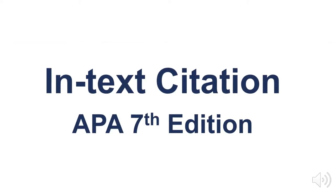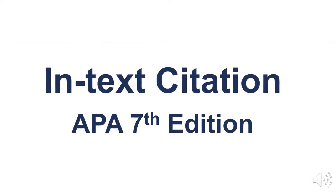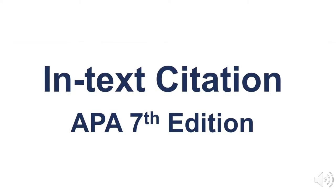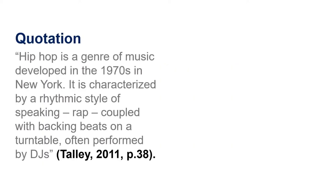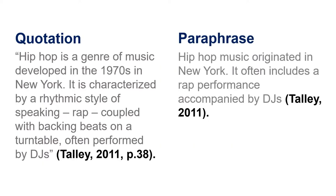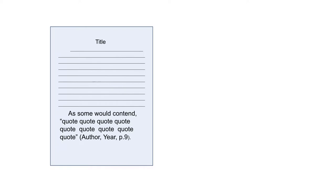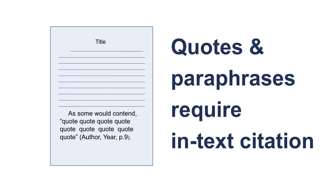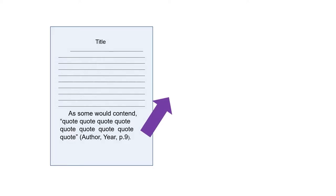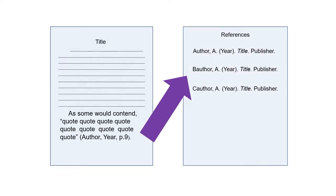This video will show you the basics on how to create an in-text citation in APA format, so that it will look something like this, or this. Any time that you paraphrase or quote someone else's words or ideas within the body of your paper, you must give credit to the original author with an in-text citation. An in-text citation is a short citation that refers the reader to the full reference at the end of a paper.